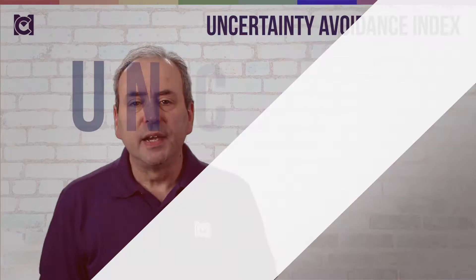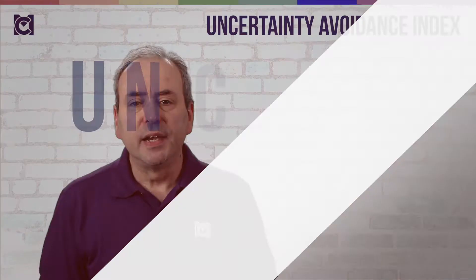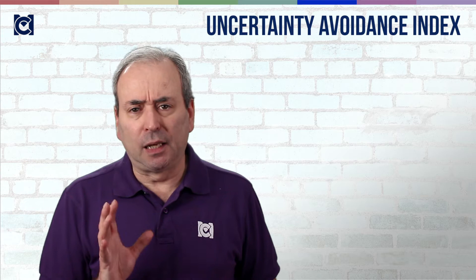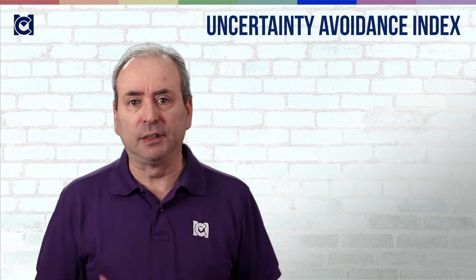Next is uncertainty avoidance index. This is about the extent to which a society will tolerate uncertainty and ambiguity — a low index — or prefers stability, control and certainty — a high index.